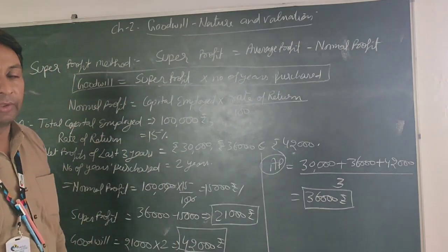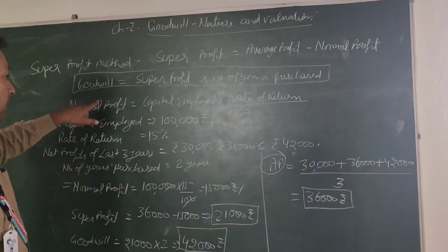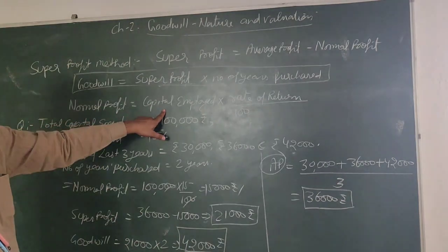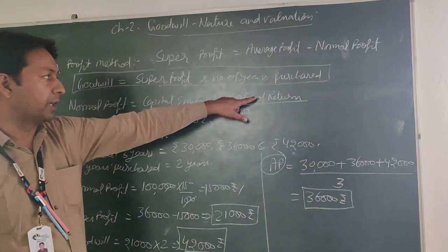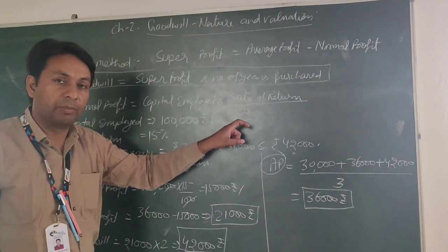Average profit calculation in previous videos we have known. Normal profit formula is capital employed into rate of return. We have to calculate normal profit.